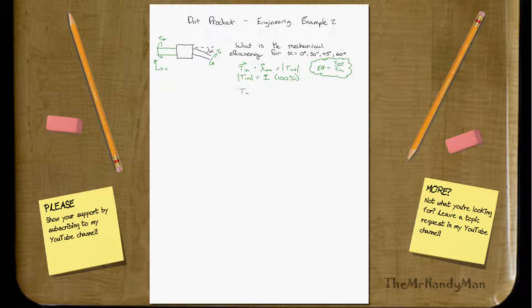So if my vector t_in is just i, and my direction of t_out is also just i, then when we do the dot product, t_in dot direction out, it's just i dot i, which equals one. That's 100%.